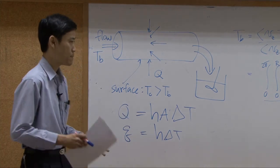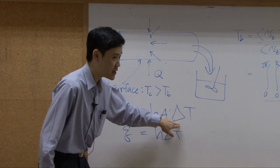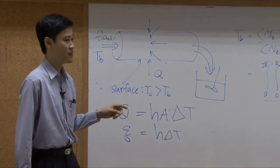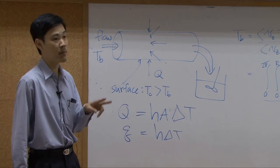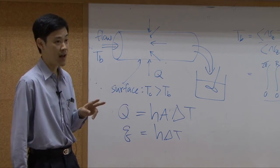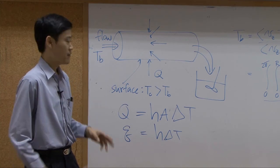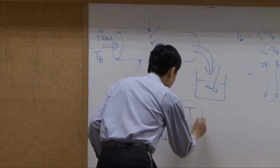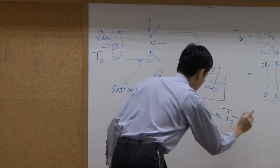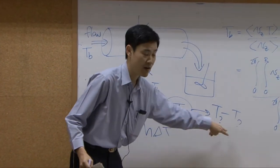The most important thing is ΔT — the difference between two temperatures. ΔT is T-something minus T-something. What are they?